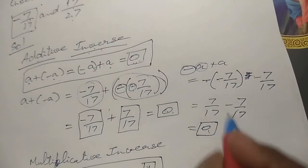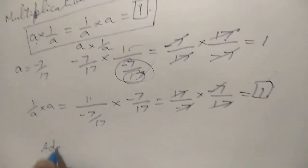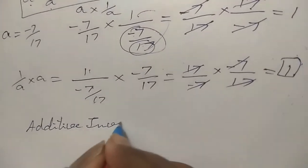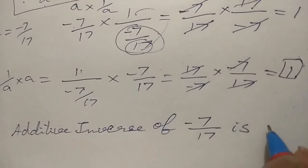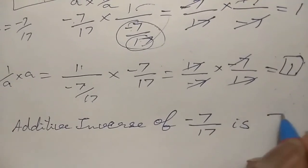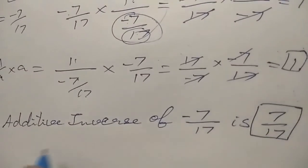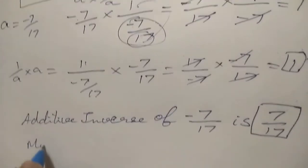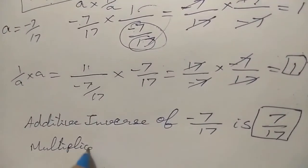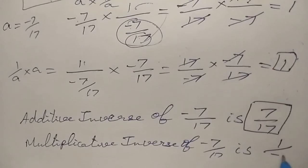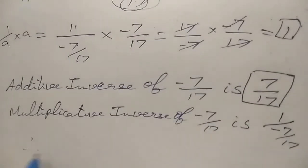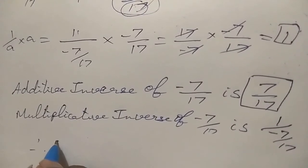When we have the additive inverse, we prove it equals 0. The additive inverse of minus 7 by 17 is 7 by 17. The multiplicative inverse of minus 7 by 17 is 1 divided by minus 7 by 17, which equals minus 17 by 7. Hence, the additive and multiplicative inverse properties are verified.